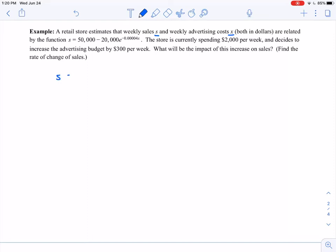So this seems important. Let me maybe write this down. S equals 50,000 minus 20,000 e to the negative 0.00004x. The store is currently spending $2,000 per week, and it decides to increase its advertising budget by $300 per week. We would like to know what is the impact of this increase on sales. So I have my equation that relates S and X, which is good. I need to label out as much information as I can. Again, let's organize what information that we have, and let's figure out what we're trying to know in this problem.